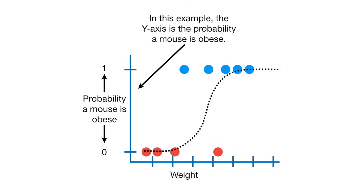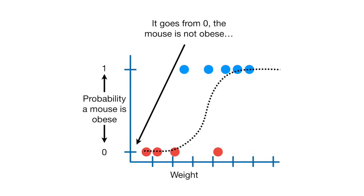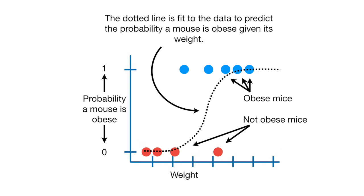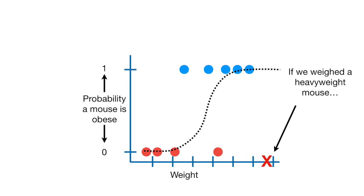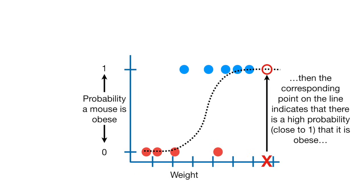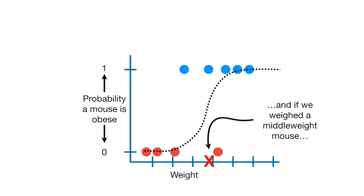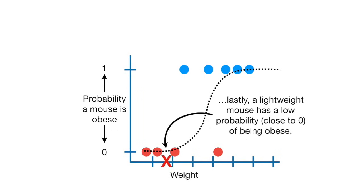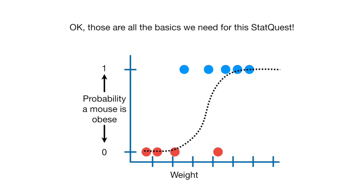In this example, the y-axis is the probability a mouse is obese. It goes from 0, the mouse is not obese, to 1, the mouse is obese. The dotted line is fit to the data to predict the probability a mouse is obese given its weight. If we weighed a heavyweight mouse, the corresponding point on the line indicates that there is a high probability, close to 1, that it is obese. A middleweight mouse has an intermediate probability, close to 0.5, and a lightweight mouse has a low probability, close to 0, of being obese.